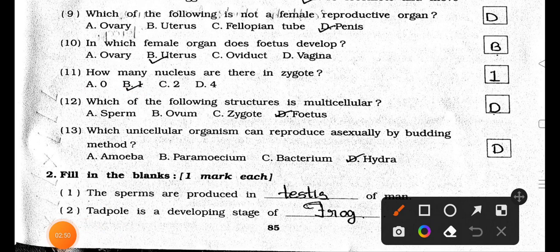Number 12. Which of the following structures is multicellular? A. Sperm, B. Ovum, C. Zygote, and D. Fetus. Answer is Option D, Fetus.